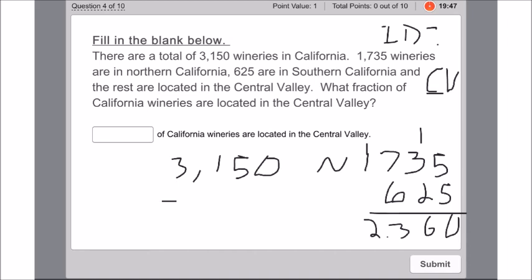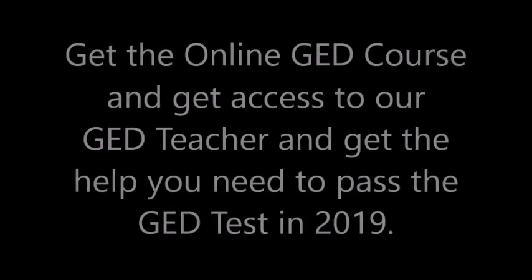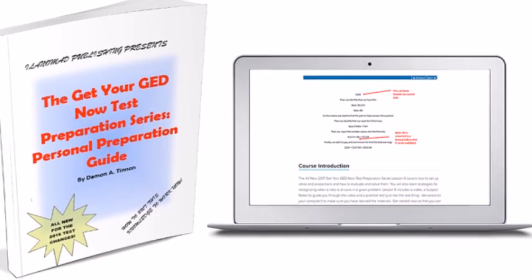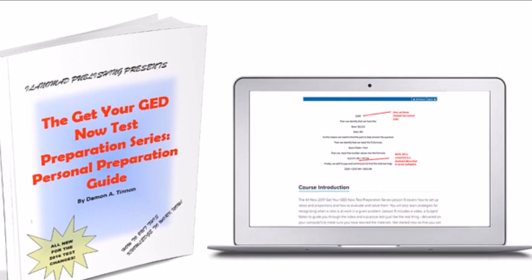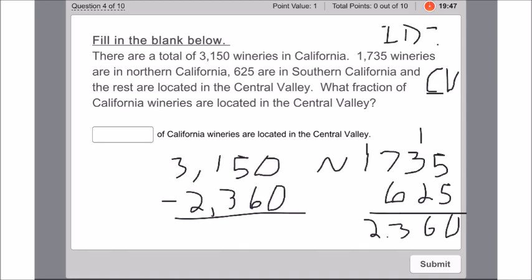We can add those together and then subtract from the total. Whatever is left has to be the Central Valley wineries. So that's 0, we're going to borrow from the 2, that becomes 11, but we have to borrow from that, so that becomes 10, then 15, so 15 minus 6 is 9, and 10 minus 3 is 7, giving us 790. So we have 790 Central Valley wineries.